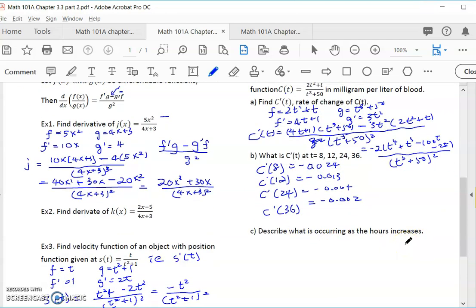Describe what's occurring as the hours increase. You will say the concentration is decreasing, because your rate of change is negative. That means there's less and less concentration, but the rate of change is also increasing. The rate of decrease is decreasing. That means it doesn't decrease as much. So it was decreasing 0.024, like 2% per liter of blood, and then at time of 36, they're still decreasing, but decrease slowed down. The decreasing is slowing down.